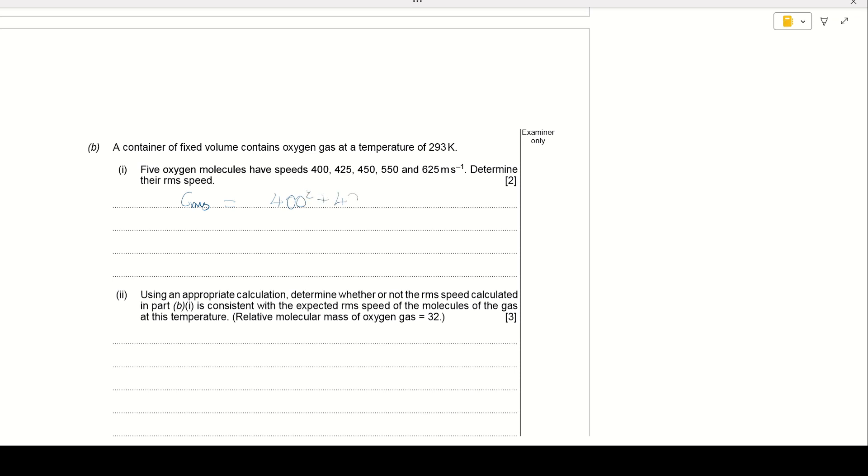So to calculate this, we're going to do 400 squared, plus 425 squared, plus 450 squared, plus 550 squared, plus 625 squared. We're going to divide it by 5. So that calculation would give us the mean of the squares of the speeds of the gas molecules. And we're simply going to root that to find the root mean square speed. The answer to that is 497 to the nearest whole number. The whole number seems sensible because all of the other figures are sort of whole numbers.